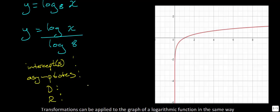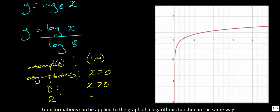Looking at the graph, we have an x-intercept at (1, 0) — this is always the case for basic logarithmic functions, just as it's the opposite for exponential equations. The graph gets infinitely close to the y-axis but never crosses it, giving a vertical asymptote at x = 0. The domain is x > 0 and the range is all real numbers, since the graph goes infinitely in both directions vertically.